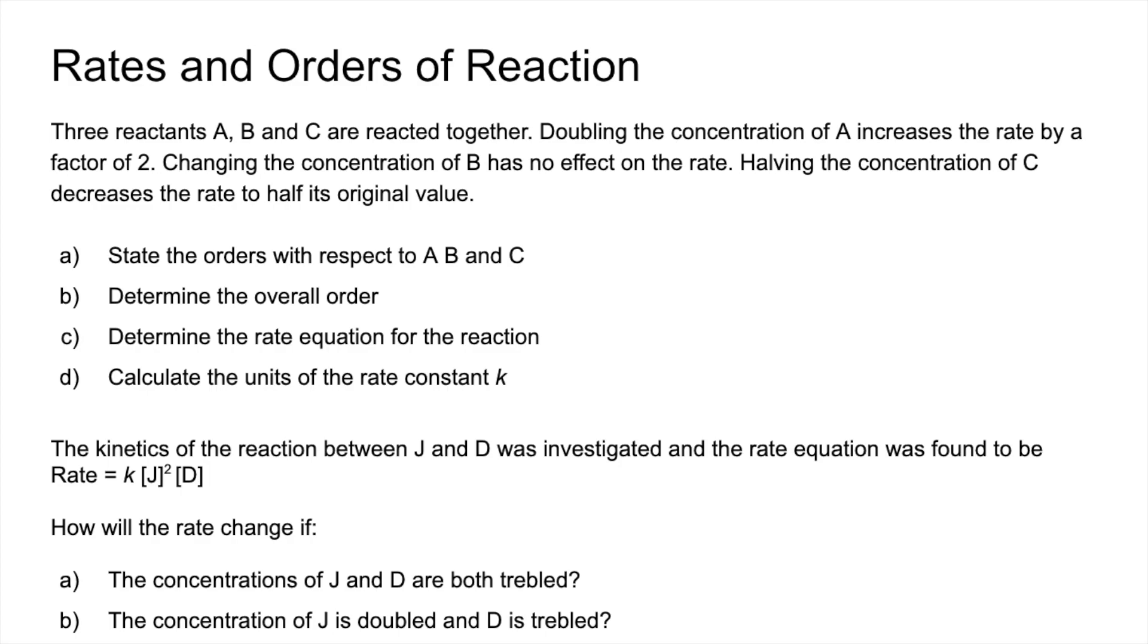Okay, so the orders with respect to A, B and C. Doubling A increases the rate by a factor of 2, so it's doing the same thing, so that's first order.